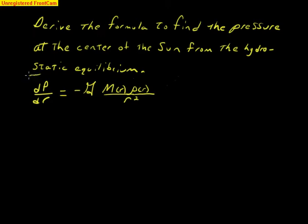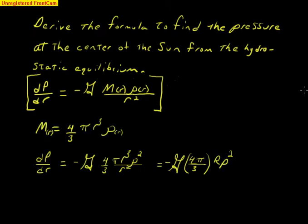This is a hydrostatic equilibrium equation. The first thing I did is relating this mass, which is a function of the radius. Mass is going to be equal to 4 thirds pi r cubed, the area times the density.